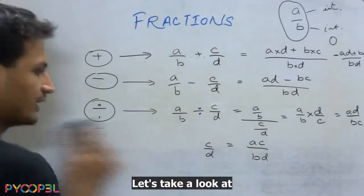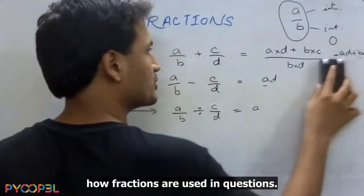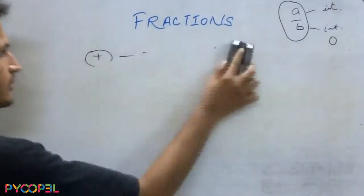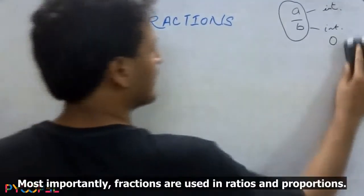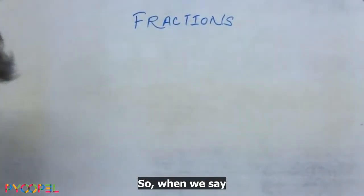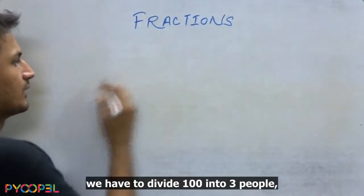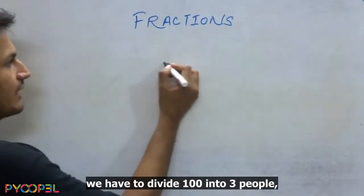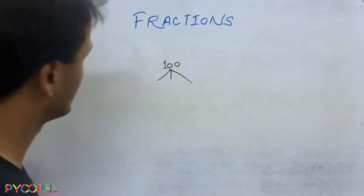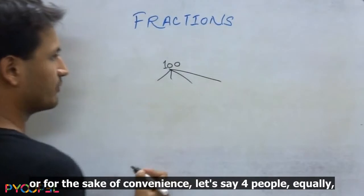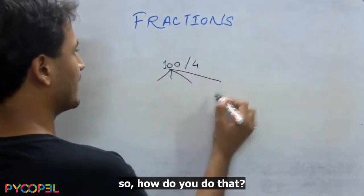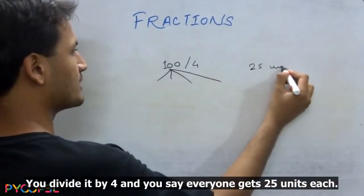Let's take a look at how fractions are used in questions. Most importantly fractions are used in ratios and proportions. So when we say we have to divide 100 into, let's say, three people or for the sake of convenience four people equally. So how do you do that? You divide it by four and you say everyone gets 25 units each.